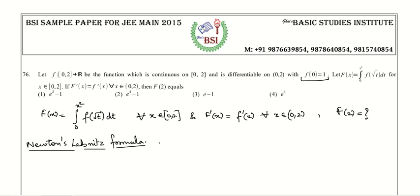Newton's Leibniz rule — it is both a rule and a formula. This formula says that if you have an integral of f(t) dt with variable limits, and the result is a function of x, then when you differentiate, you apply the fundamental theorem of calculus: take the upper limit minus the lower limit substituted into the integrand.